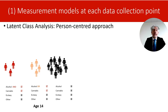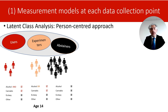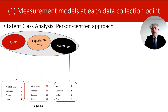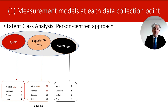Latent class analysis is a person-centered method because it is focused on classifying persons and individuals. Let's assume that in this example, three classes can optimally explain the patterns of behaviors observed when adolescents are 14 years of age. These latent classes are the underlying causal factors that explain the patterns of behaviors we observe — the patterns of substance use are explained by underlying typologies of individuals that differ in their propensities for substance use. For example, there may be a class of users with propensity for frequent use of different substances, a class of experimenters who display propensity to use some substance of choice, and a class of abstainers who tend to avoid frequent use of any substance.